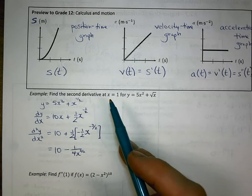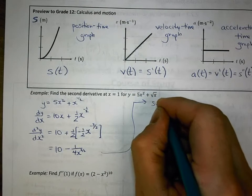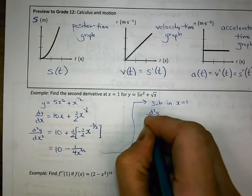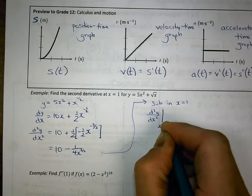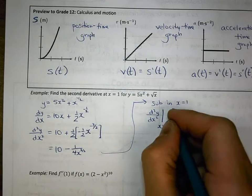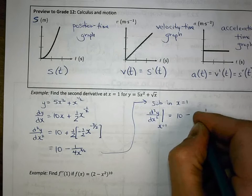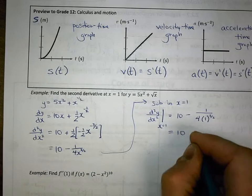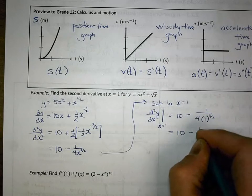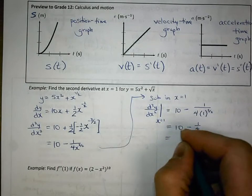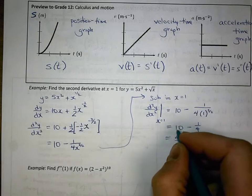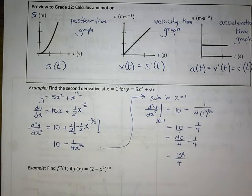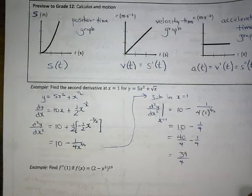Now I want to find the second derivative when x equals 1. I'd write d squared y over dx squared evaluated at x equals 1. So I have 10 minus 1 over 4 times 1 to the power of three-halves. That gives me 10 minus one-fourth, which is essentially 40 over 4 minus 1 over 4, so I end up with 39 over 4.